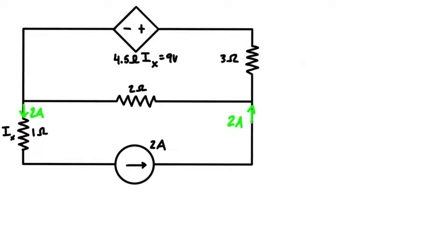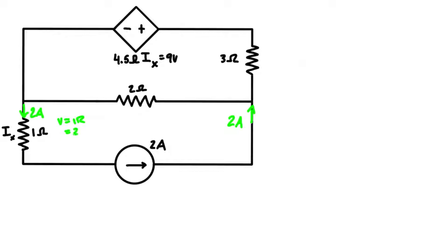I always like to apply Ohm's law to all resistors where possible. For the one-ohm resistor, we can solve it right now: v = ir gives us two amps times one ohm, so the voltage drop across this resistor is two volts.